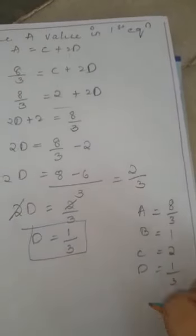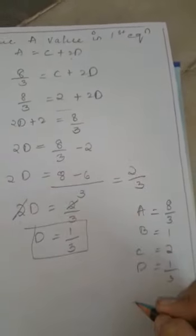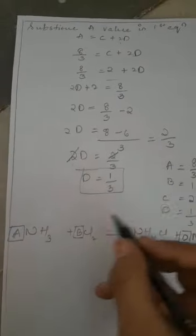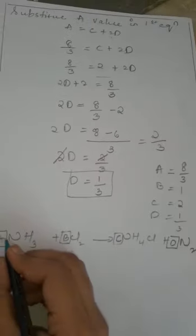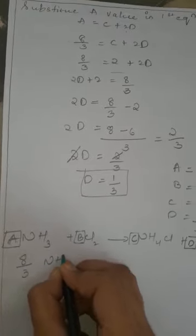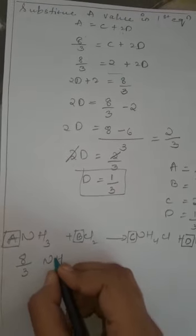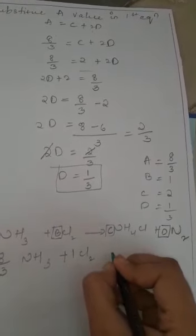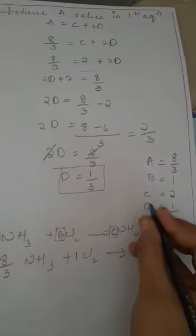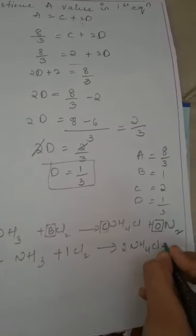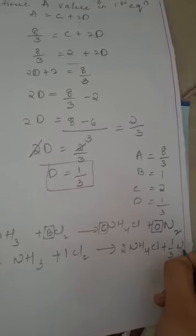Now we need to substitute these values back into the equation. A equals 8/3, so we write 8/3 NH₃; B equals 1, so 1 Cl₂; C equals 2, so 2 NH₄Cl; and D equals 1/3, so 1/3 N₂.